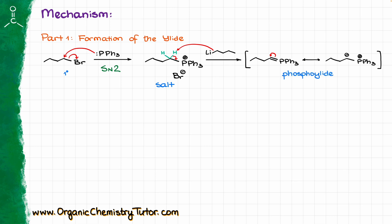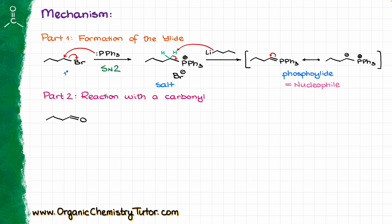The phosphoylide we have just formed is a pretty good nucleophile, which means that if we bring it into contact with an electrophile such as a carbonyl compound — like an aldehyde or a ketone — these guys can react with each other. For my carbonyl, I'm going to use butanal. I take my phosphoylide and the first step is the nucleophilic attack from the negatively charged carbon onto the carbonyl, which pushes electrons onto the oxygen and makes a new carbon-carbon bond, giving me an intermediate.